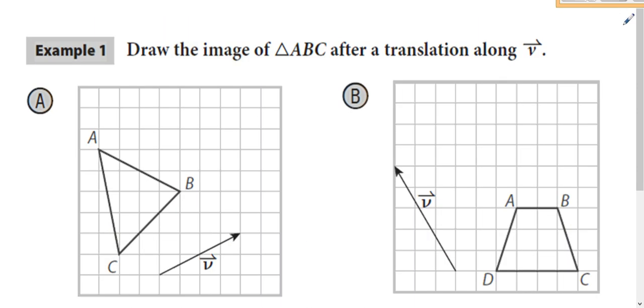When you have transformations on a coordinate grid like this, it's easy enough because you can just count. How much does it move to the right and how much does it move up? So vector V moves one, two, three, four units to the right and up two. So we're going to move every vertex four units to the right and up two.